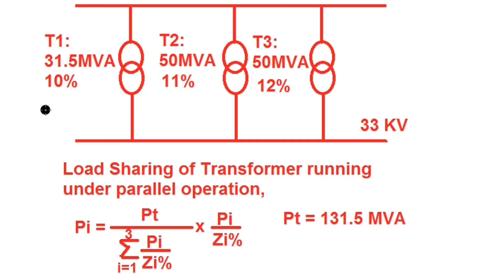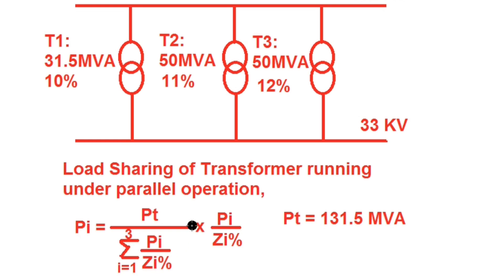Load sharing of a transformer is proportional to its MVA capacity and inversely proportional to its percentage impedance. The load shared by the i-th transformer is given by: Pi = PT divided by the summation (i=1,2,3) of Pi divided by Zi_percentage, multiplied by Pi/Zi. Here PT is the total load of the substation, equal to 131.5 MVA.